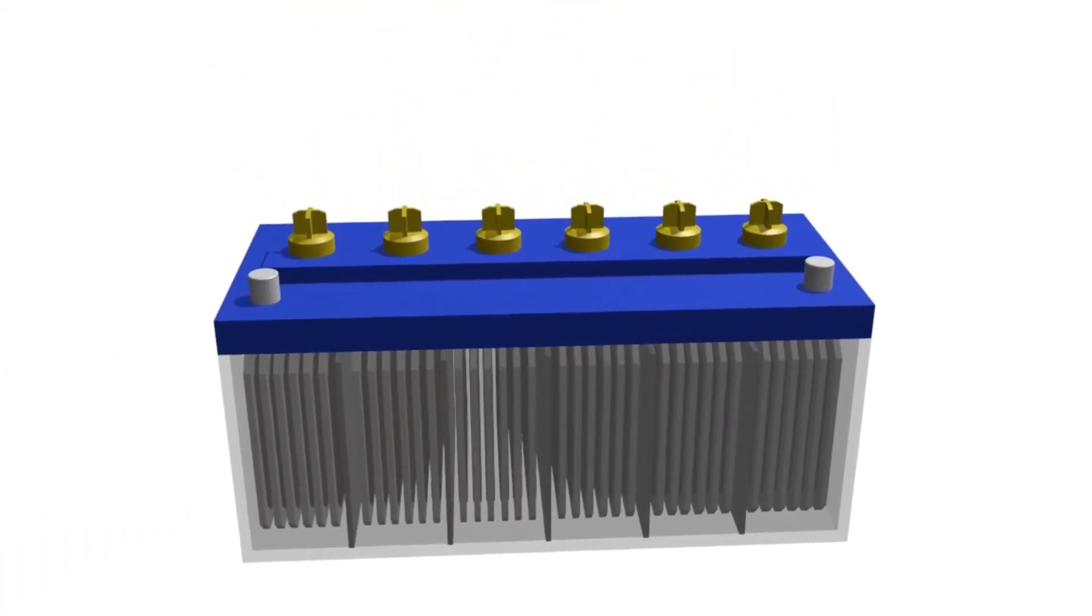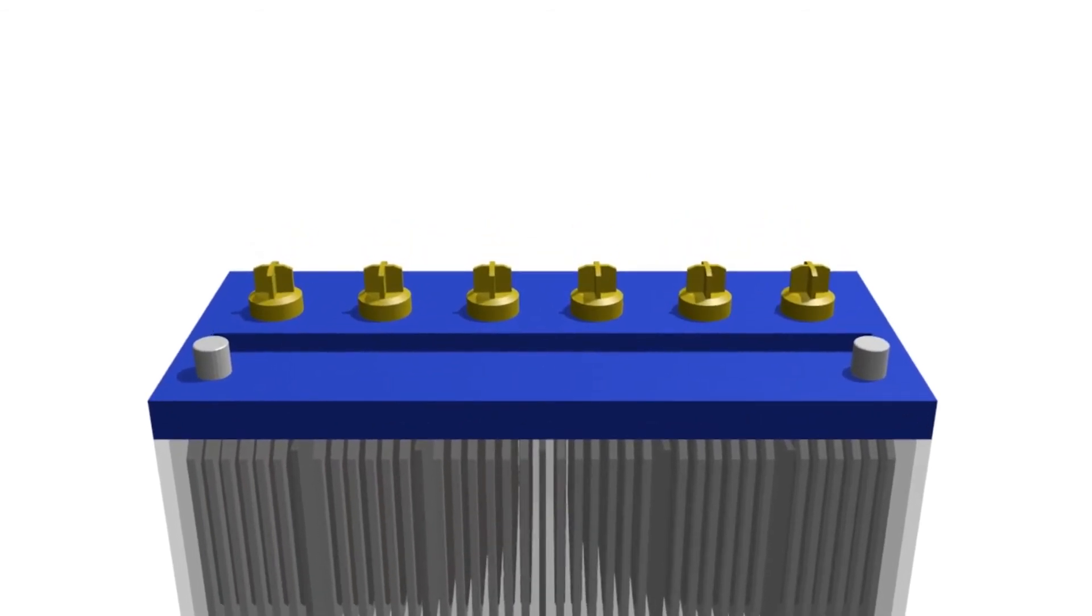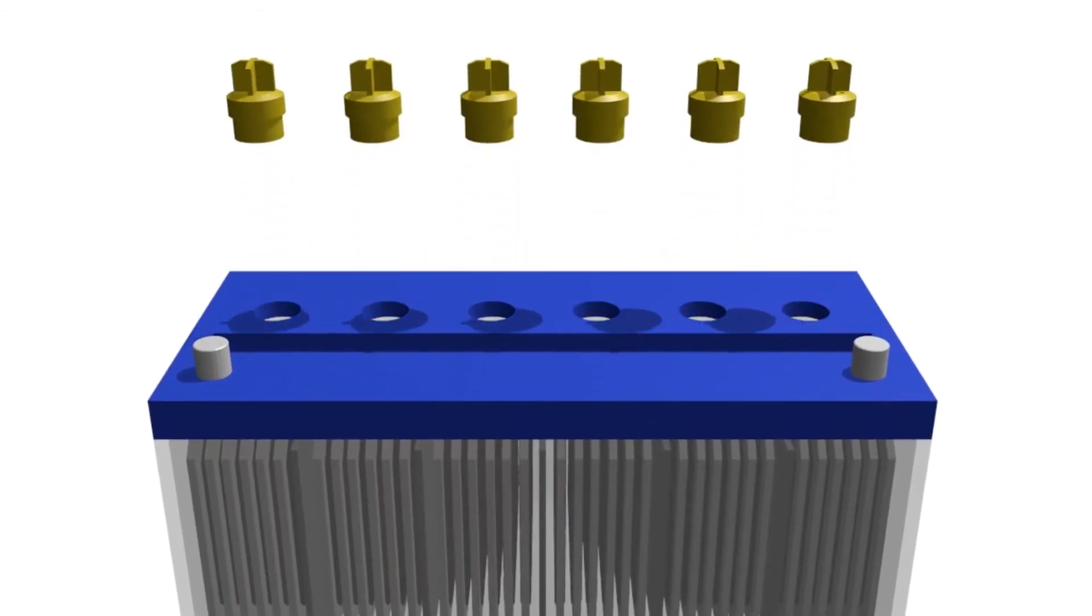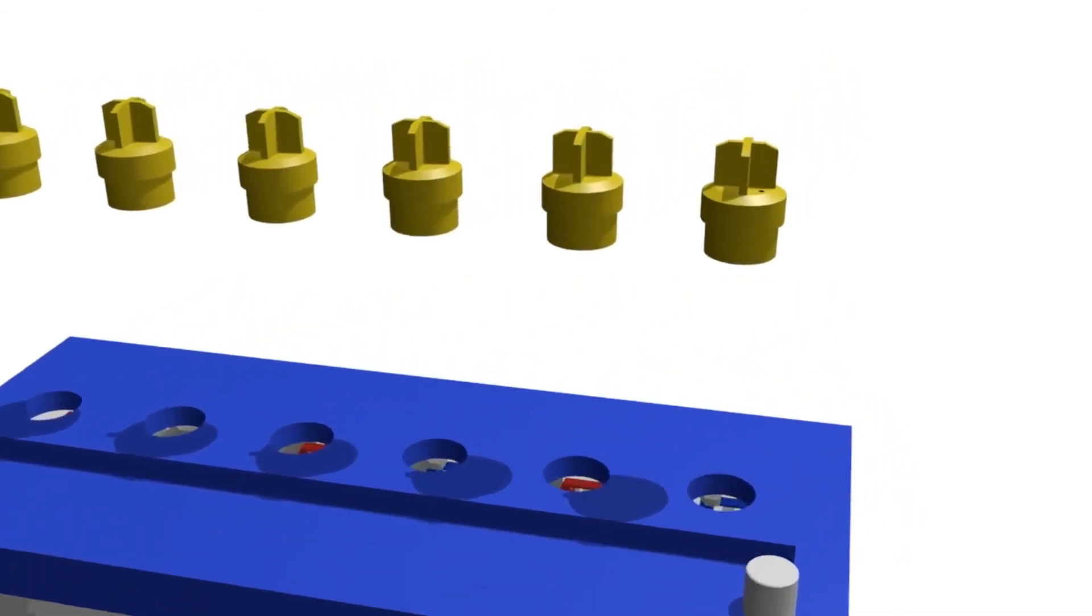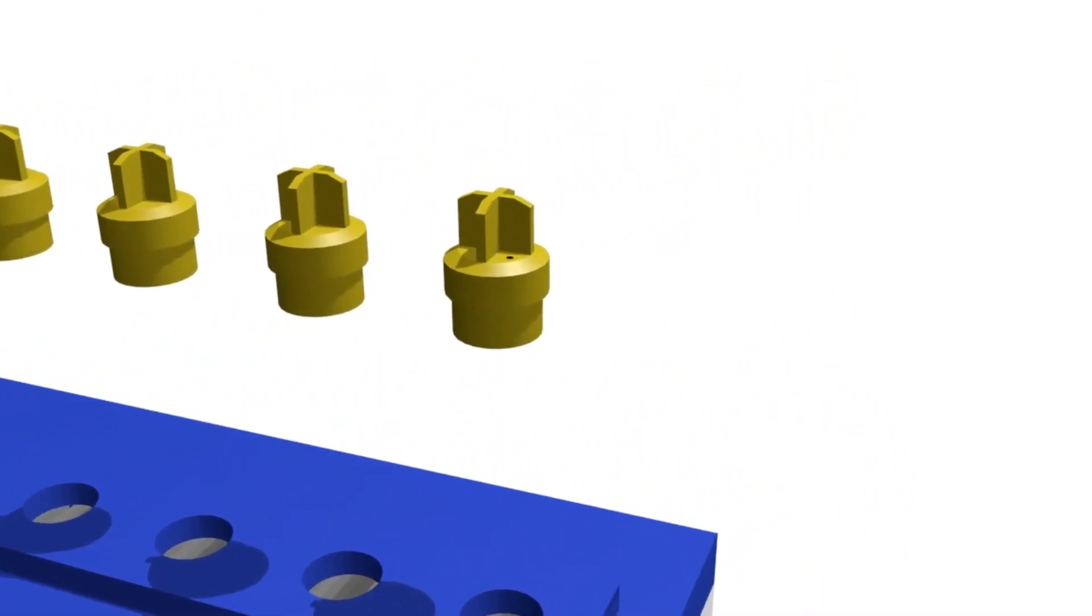In the cover, there are six caps which are used to fill the sulfuric acid solution into each cell. These caps also have ventilation holes, which are useful to stabilize the pressure inside the battery cell.